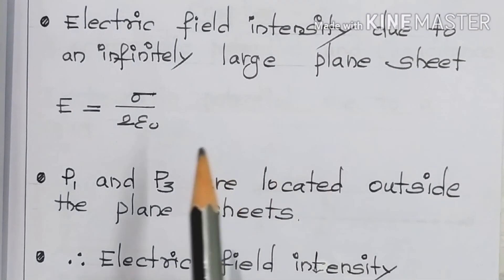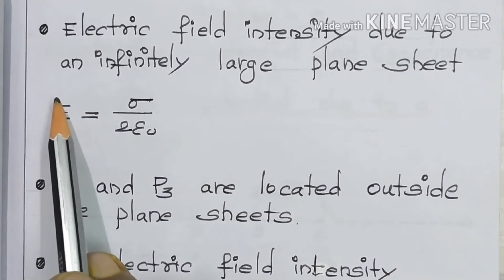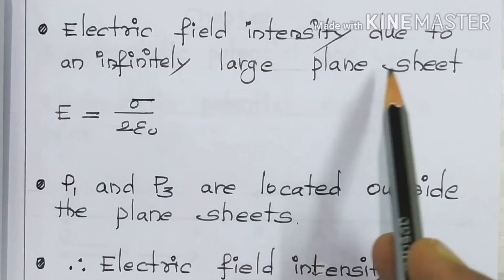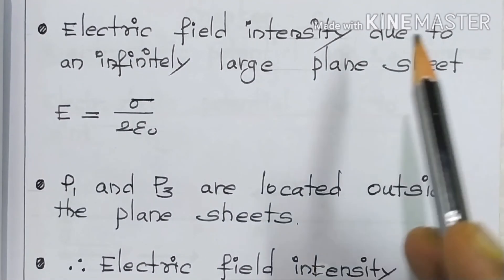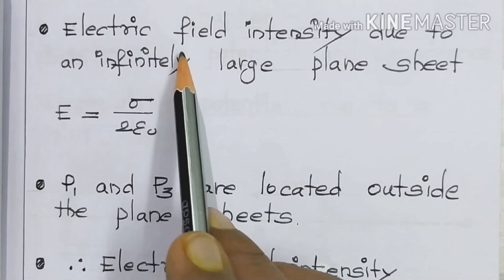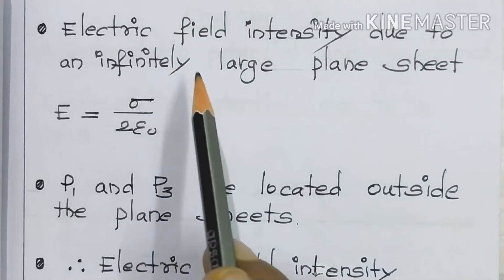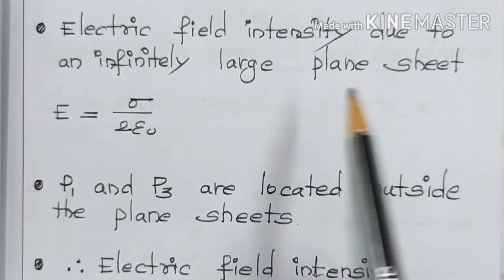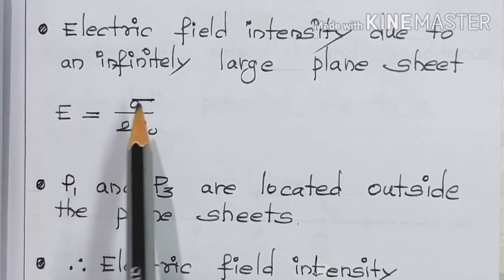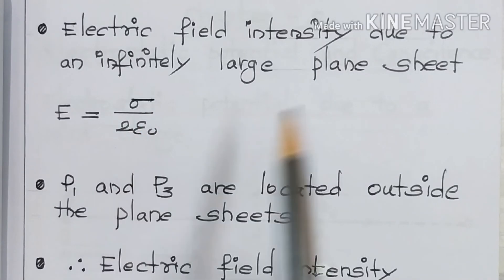Electric field intensity due to an infinitely large plane sheet — we have already seen this derivation. The electric field intensity due to an infinitely large plane sheet is E = σ / 2ε₀.